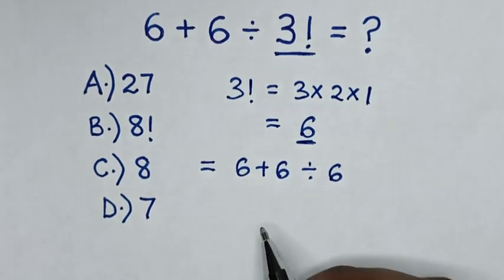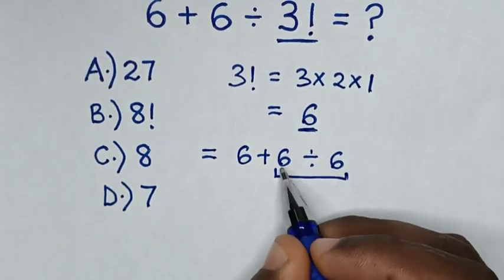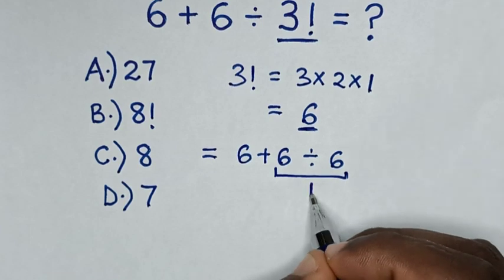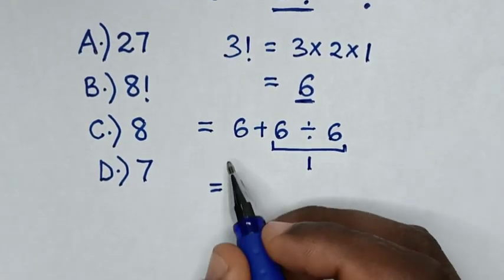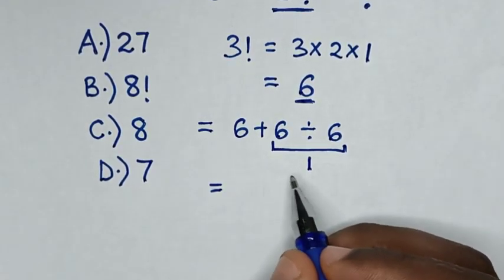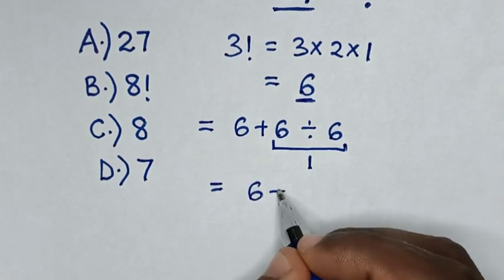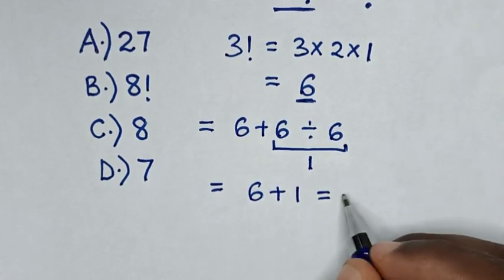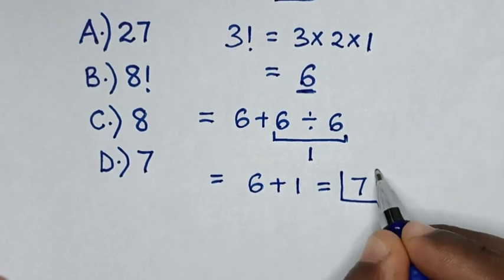In the next step we'll deal with the division: 6 divided by 6 is 1. Then it will be equal to 6 plus 1, whereas 6 plus 1 is equal to 7. Therefore 7 is our final answer.